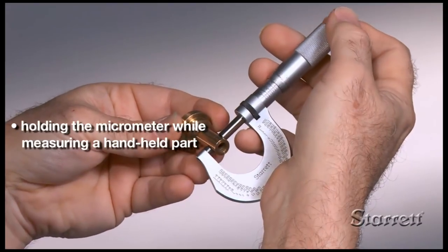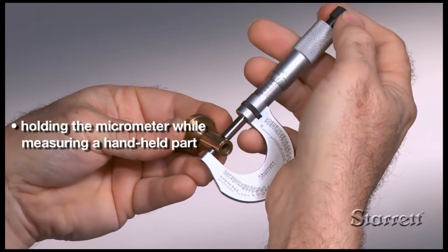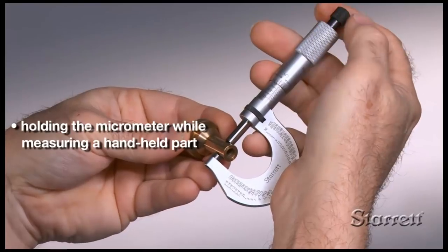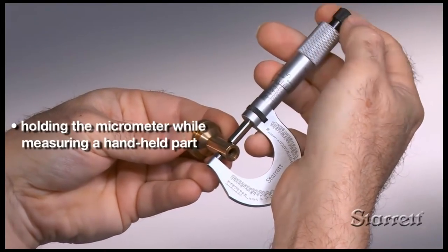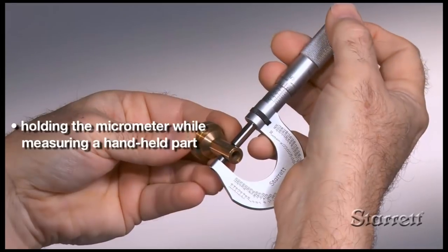To make a measurement, hold the part with your left hand and position it against the anvil face. Then, hold the micrometer with your right hand and turn the thimble counterclockwise until the spindle face contacts the part.